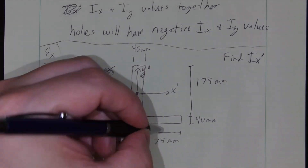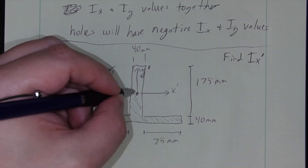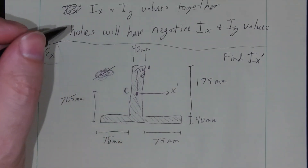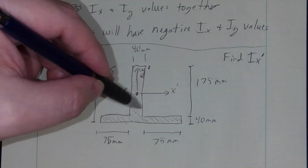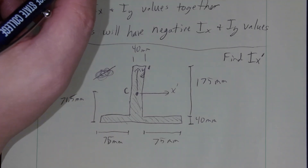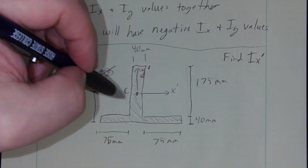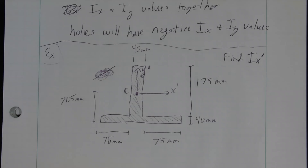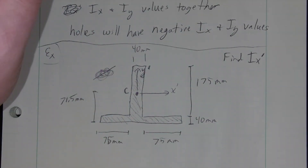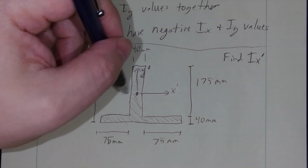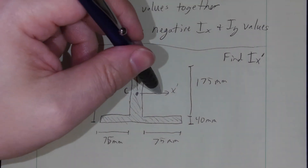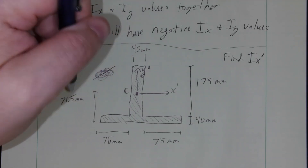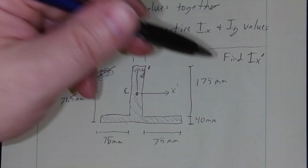This shaded area is what we want to find the moment of inertia about. If drawn three-dimensionally into the page, this would be the cross-section of a T-beam — a structure that provides a lot of strength along the web without the added weight of making it fully solid. The moment of inertia paired with the bending moment tells us the stress and whether the beam would fail.